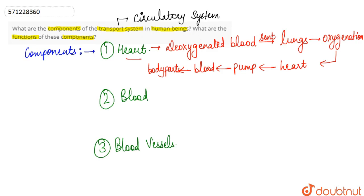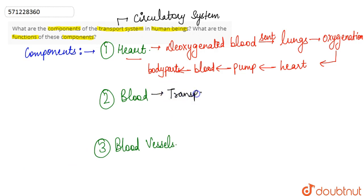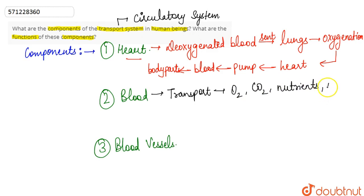What actually carries the blood and transports various nutrients, oxygen, carbon dioxide, and waste in our body is the blood itself. So the function of blood is to transport oxygen, carbon dioxide, nutrients, nitrogenous waste, and so on from one body part to another.